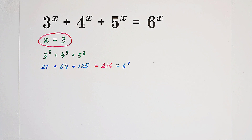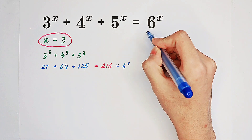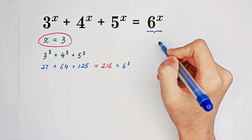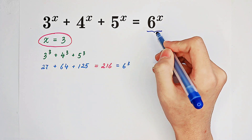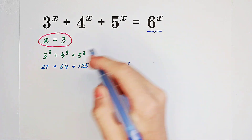However, it's very hard to find other solutions directly. So a second method comes to mind: we can instead prove that there are no other solutions. We have 6 to the power of x on the right-hand side, so what we can do is divide both sides by 6 to the power of x.